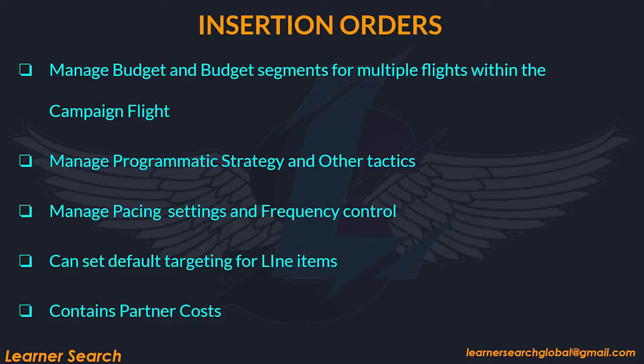More about insertion orders: at the IO level, you can manage budget and budget segments for multiple flights within the campaign flight. You can also manage programmatic strategy and other tactics, as well as pacing settings and frequency control. At this IO level, you can set default targeting for line items. It also contains partner costs.